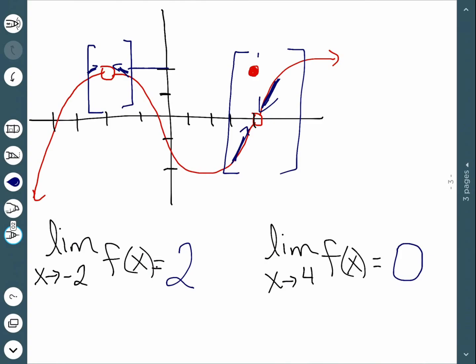Even though my actual function defined at 4 is equal to 2, the limit is actually 0. Because we don't actually care what happens to our function at that particular point. We just want to know what's happening very close to it. And very close to the point x equal to 4, we're getting very close to y equal to 0.